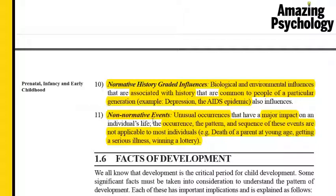Finally, we have non-normative events — unusual occurrences that influence an individual but that most other individuals of the same age group or generation do not go through. Examples include the death of a parent at a very young age, being chronically ill when small, or winning a lottery. For example, while losing a parent is normal for people in their 60s and 70s, for a child between two and fifteen years it is not normal, and therefore impacts that individual very deeply.